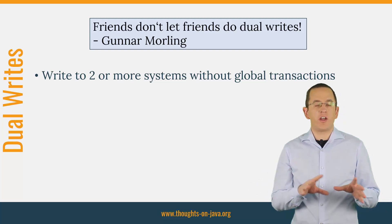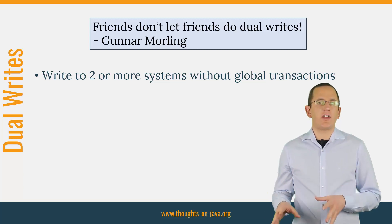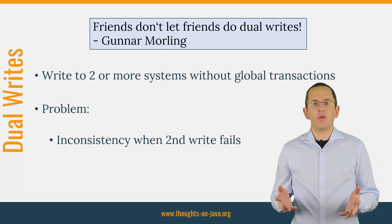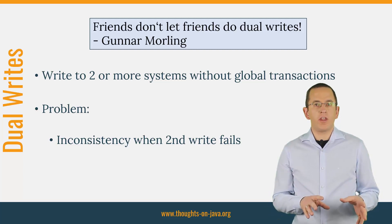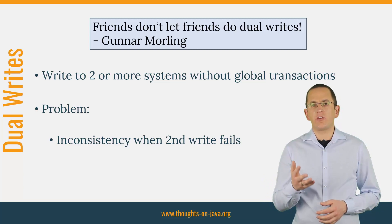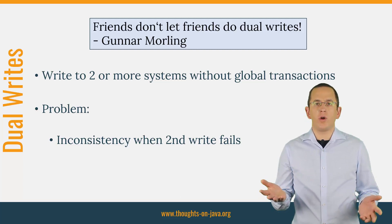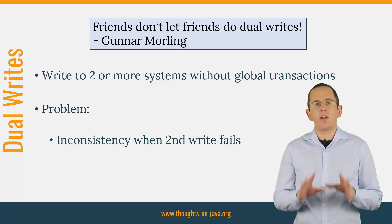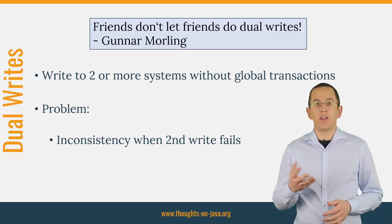As long as both write operations are successful, a dual write might seem like a great idea. It's easy and it scales great. But what happens if the second write operation fails? You already performed the first one and can't easily cancel it. You might try to handle that by performing the inverse operation of your previous update, but that's often complicated and there's no guarantee that it works. The inverse operation might fail, or your application crashes before you can perform the inverse operation. There are lots of different scenarios in which a failed second write operation of a dual write results in inconsistent data.